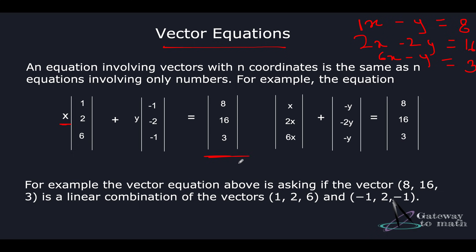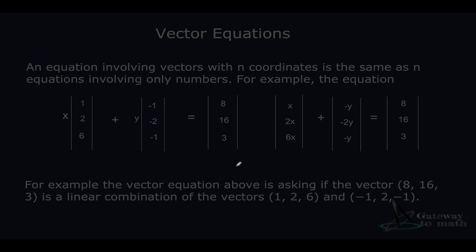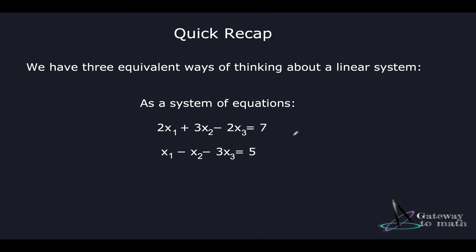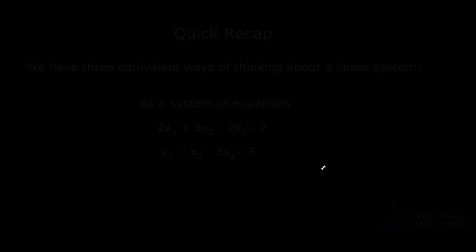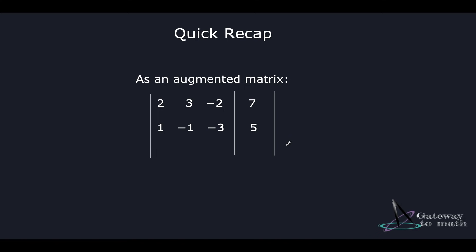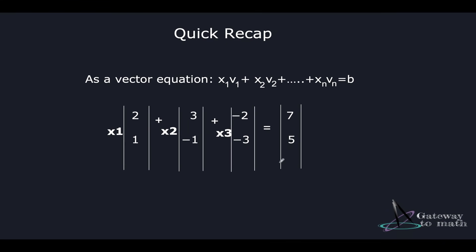Quick recap: we've seen linear systems can be represented in three forms — as equations, as an augmented matrix (covered in the matrix video session, linked in the description), and as vectors, which we just saw. You take the scalar values out, keep the vector values, and that's how you reconstruct your original vector.